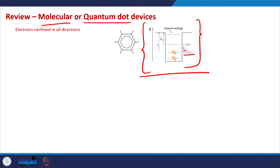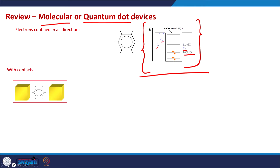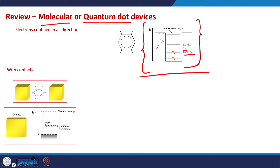In these molecular systems we can define ionization potential and electron affinity to characterize their electronic structure. To make devices we also need contacts, and generally the contacts are bulk contacts. In molecular devices we will have a bulk contact, typically a metallic bulk contact.